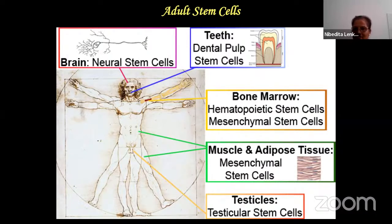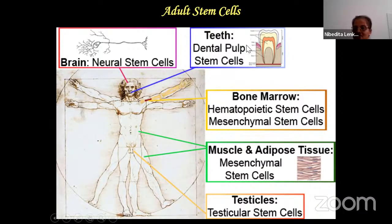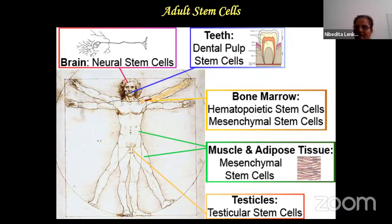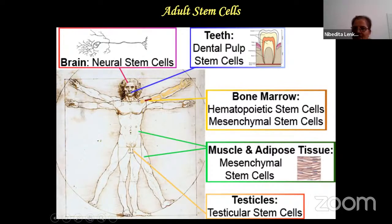From bone marrow we have two different stem cell types: hematopoietic stem cells and mesenchymal stem cells. Mesenchymal stem cells can give rise to bone, fat, and muscle/adipose tissues. From the gonads, dental pulp, and many other tissues and organs we can also find stem cells - dental pulp retains mesenchymal stem cells. The problem is access - for neural stem cells, I cannot easily access the brain; for dental pulp, you can get them when extracting teeth; bone marrow is invasive but accessible.